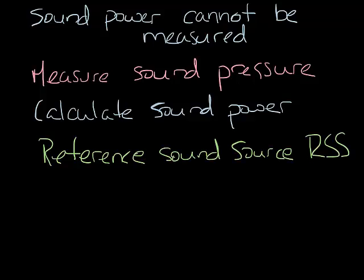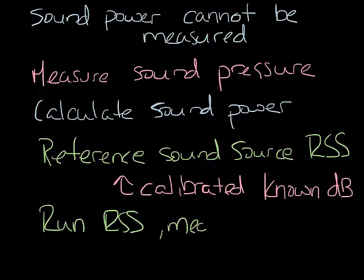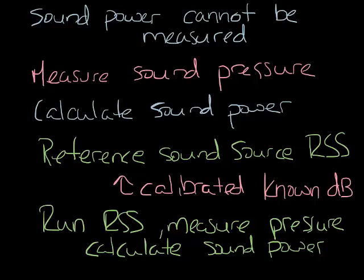The RSS is calibrated to a known sound power, say 80 dB in every band. Then when you take sound pressure readings in the sound room you can calculate the difference between the known RSS data and the measured sound pressure and then you know how to correct for test data you take later in that room.